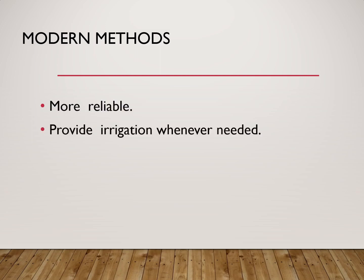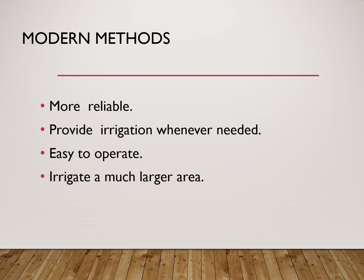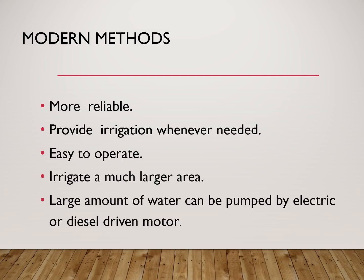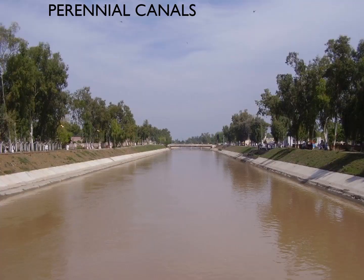Now we will look at modern methods of irrigation which are more reliable. They can provide water for irrigation whenever needed and are easy to operate. Most of them operate through electricity and can irrigate a much larger area because water can be pushed towards the fields with more force. People use diesel-driven motors or electric motors in order to irrigate through modern methods.